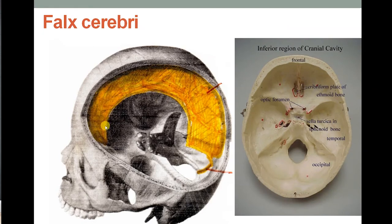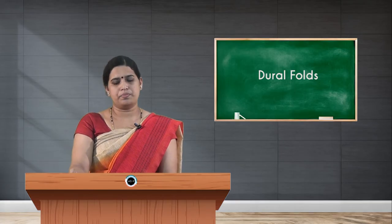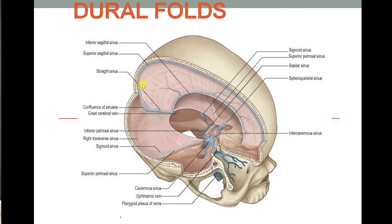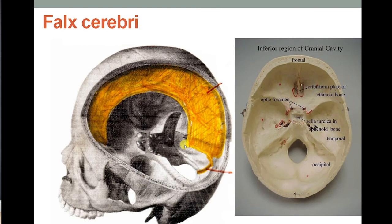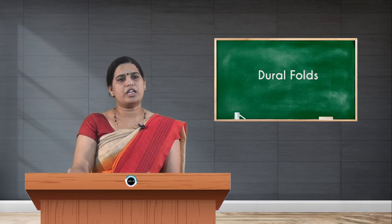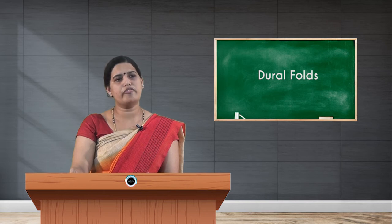After the crista galli, falx cerebri has an attached margin attached all the way along to the superior sagittal sulcus. After the frontal crest is the superior sagittal sulcus, where the attached margin of the falx cerebri runs. As it passes posteriorly, it blends with another dural fold — the tentorium cerebelli — merging with the superior surface of the tentorium cerebelli.